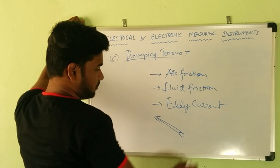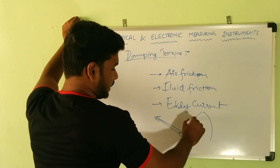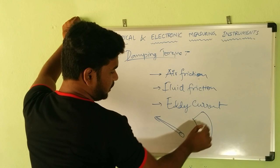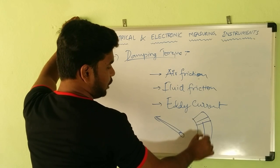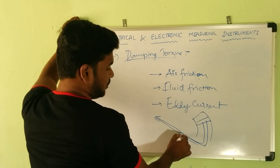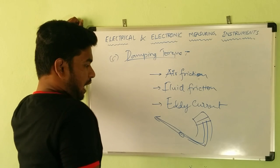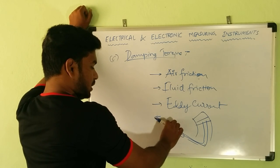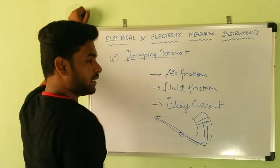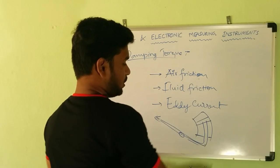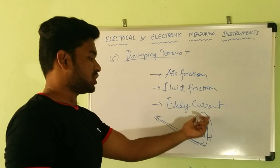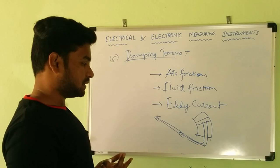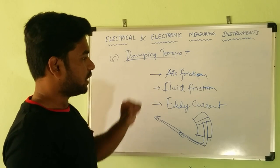Suppose this is the pointing system. Along one side I place a closed air chamber, which is closed at one end and open at one end. There is a piston and an aluminium vane which connects the piston to the pointer. This piston moves in the closed air chamber. Whenever the pointer tries to oscillate, the air friction inside the chamber does not allow it to oscillate freely. In this manner, we get air friction damping.